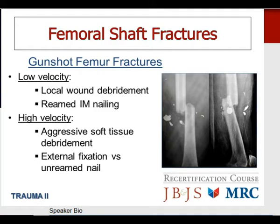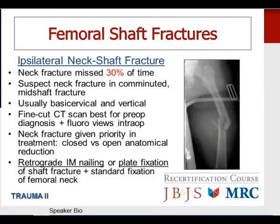The ipsilateral neck-shaft fracture is important: the neck fracture is missed approximately one-third of the time in the literature. In a patient with a comminuted mid-shaft fracture, you must consider an associated femoral neck fracture; these are usually basicervical and vertically oriented. A fine-cut CT scan is the best imaging for preoperative diagnosis. Intraoperatively, multiple fluoroscopic views of the hip are appropriate. Once recognized, the neck fracture is given priority — anatomical reduction with screw fixation, then either retrograde nailing or plate fixation of the shaft fracture.